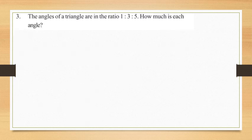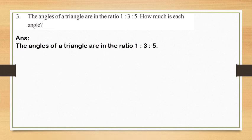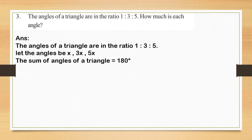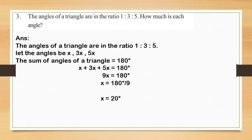Third question: the angles of a triangle are in the ratio 1 is to 3 is to 5. How much is each angle? From the question, the angles of a triangle are in the ratio 1 is to 3 is to 5. So, let us take angles be X, 3X and 5X. We know the sum of angles of a triangle equal to 180 degrees. That is, X plus 3X plus 5X equal to 180 degrees. Where X plus 3X plus 5X equal to 9X, which is equal to 180 degrees. From there, X equal to 180 by 9, which is equal to 20 degrees. So X equal to 20 degrees.